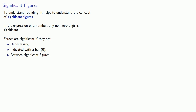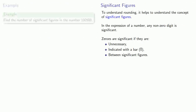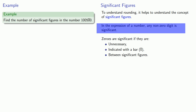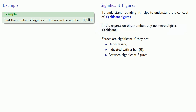Let's try out a few examples. Let's find the number of significant figures in the number 100500. The first thing we note is that any non-zero digit is significant. So in 100500, the significant figures are, first of all, the 1 and the 5.